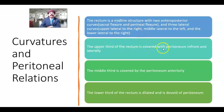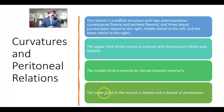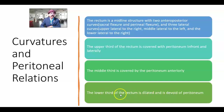The upper third of the rectum is covered with peritoneum in front and laterally. The middle third is covered by peritoneum anteriorly. The lower third of the rectum is dilated — we call it the ampulla — and is devoid of peritoneum.